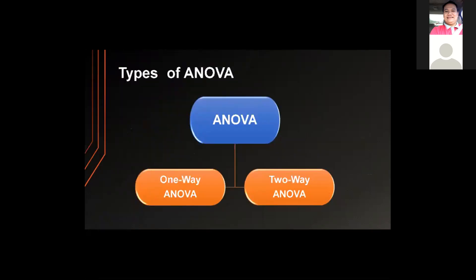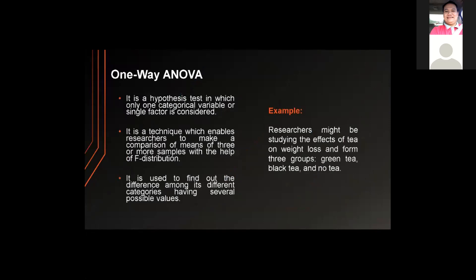There are two types of ANOVA commonly used: one-way ANOVA and two-way ANOVA. One-way ANOVA is a hypothesis test in which only one categorical variable or single factor is considered. It enables researchers to compare means of three or more samples with the help of F distribution. For example, researchers might study the effects of tea on weight loss, forming three groups: green tea, black tea, and no tea, then compare weight loss across the three groups.